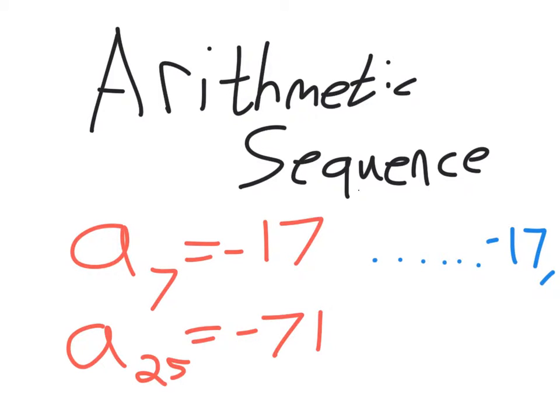And if you're told the 25th term of a sequence, so we're at 7, 8, 9, 10, 11, 12, all the way to the 25th term is negative 71.